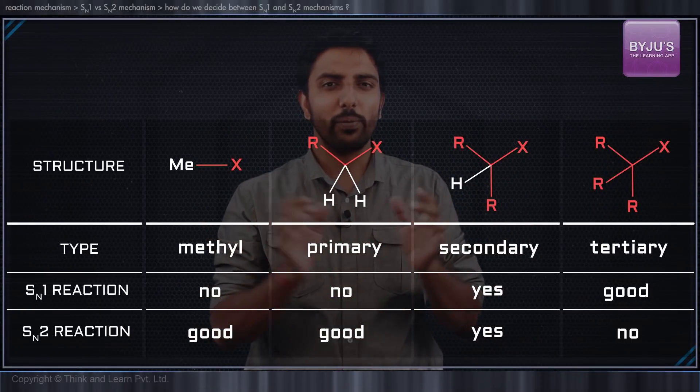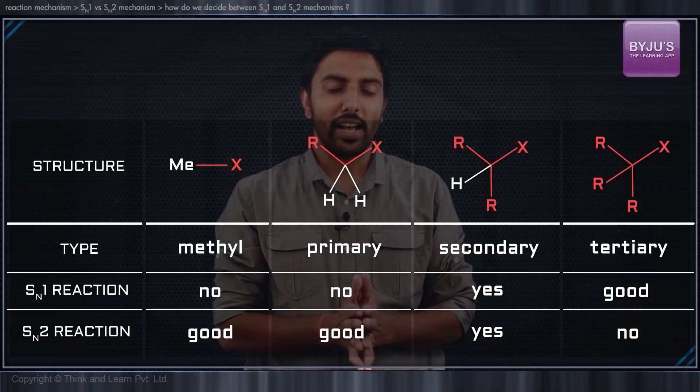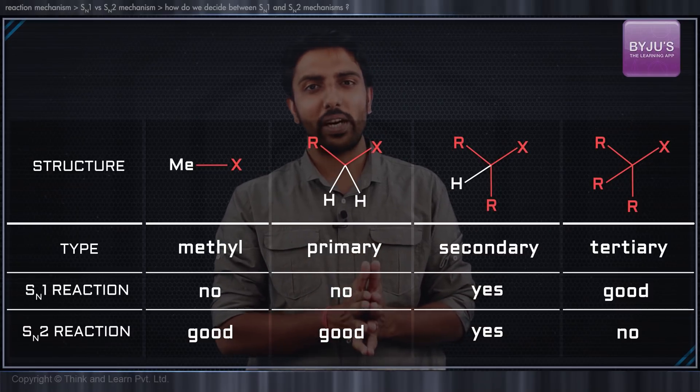Now let us bring back a table to compare the effect of simple variations in structure and the feasibilities of SN1 and SN2 reactions.